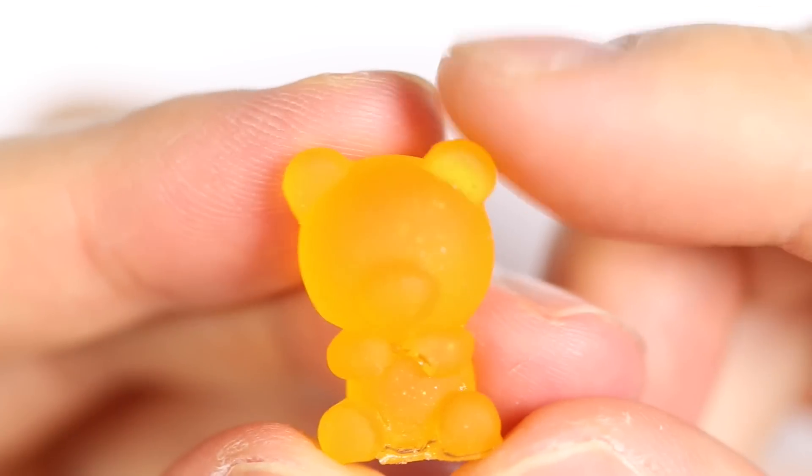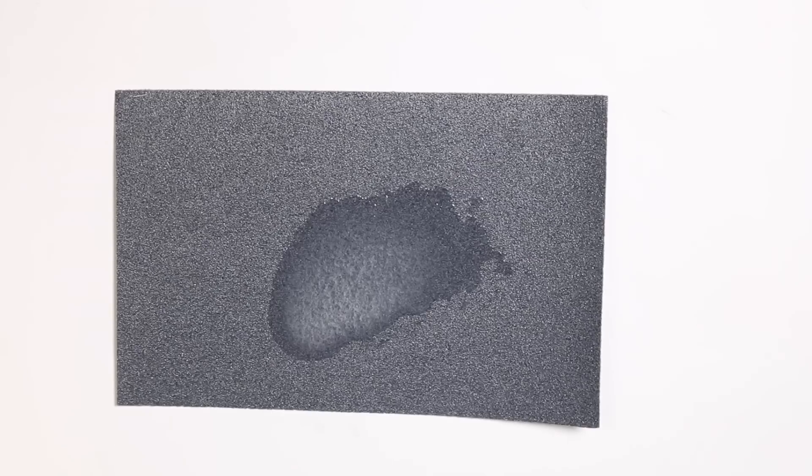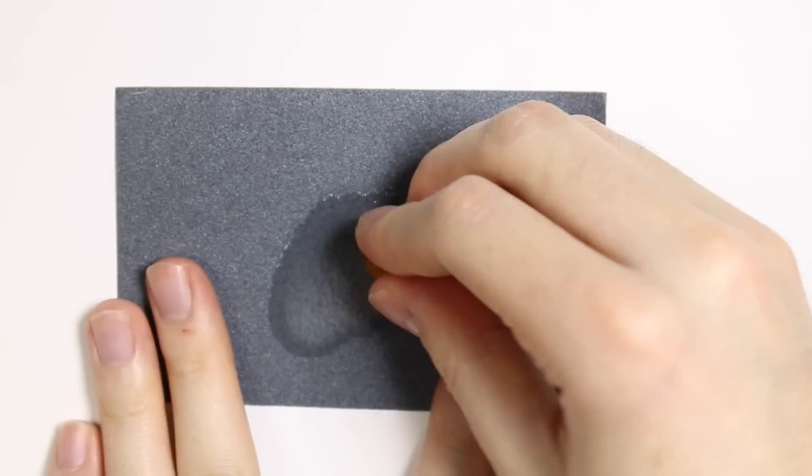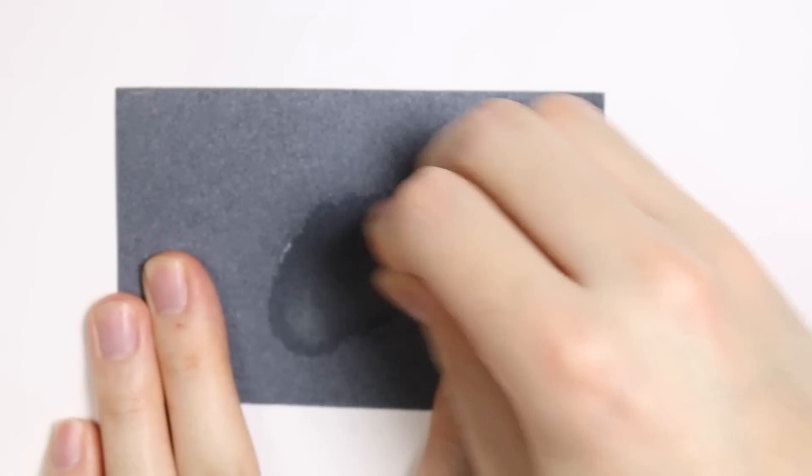And this is how the little guy looks like. And I'm taking some water and sandpaper and I'm sanding down the bottom to make it smooth.